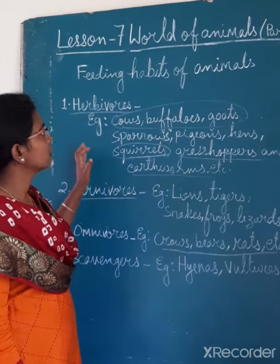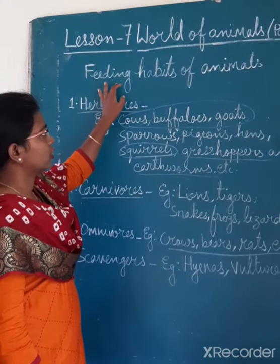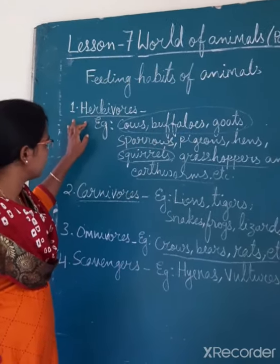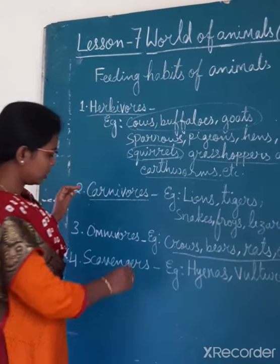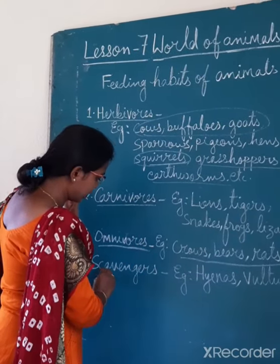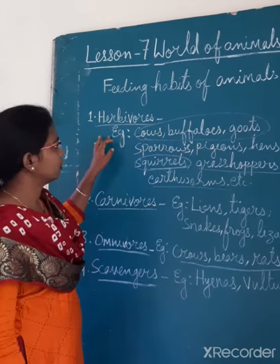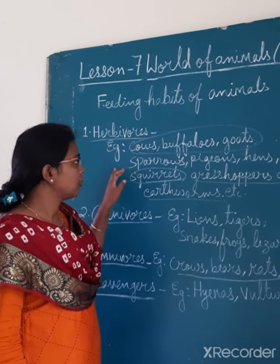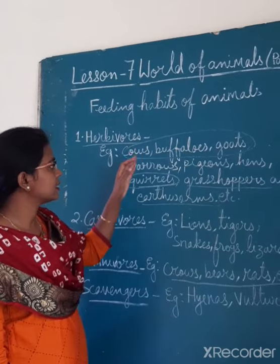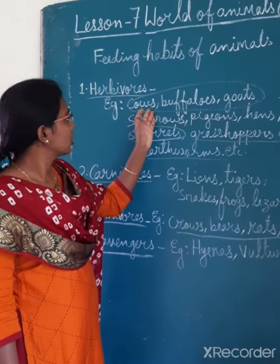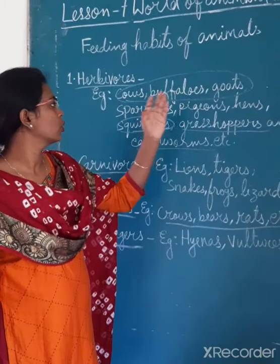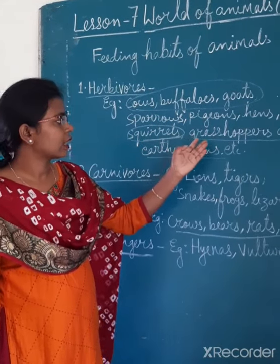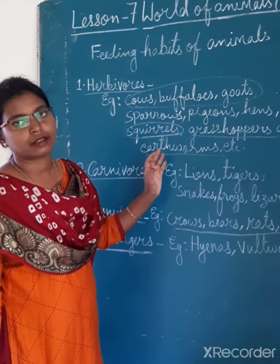So, once again students, according to the feeding habits of animals, it is grouped as herbivorous, carnivorous, omnivorous and scavengers. Herbivorous are those animals who eat the plants and grass. Examples are cows, buffaloes, goats, sparrows, pheasants, hens, squirrels, grasshoppers, earthworms, etc.